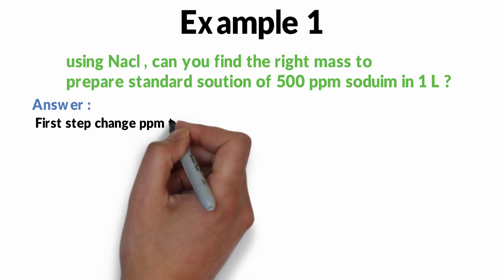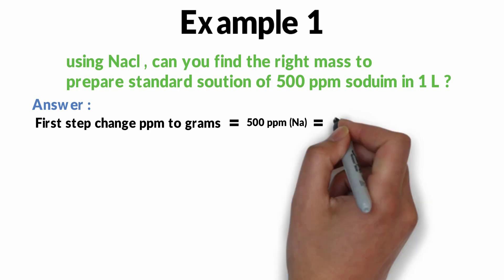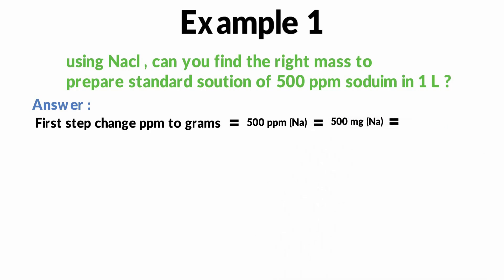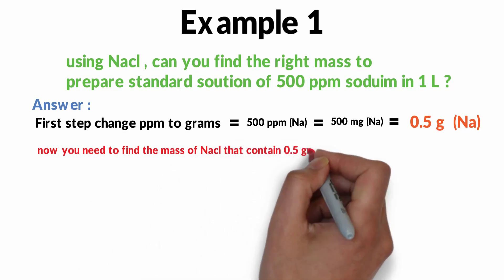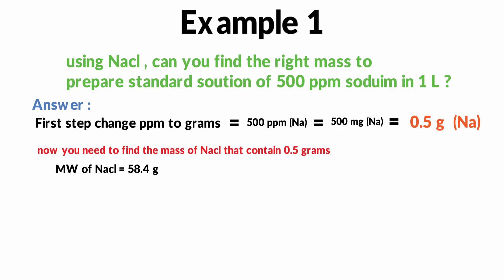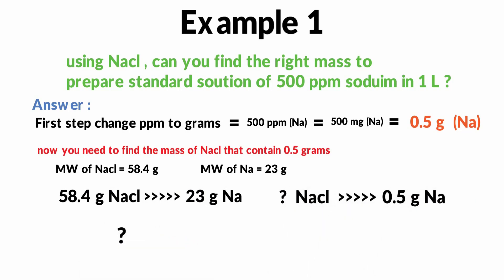First step, you need to change ppm to grams. 500 ppm equals 500 milligrams, that is 0.5 grams of sodium. Now you need to find the mass of sodium chloride that contains 0.5 grams. The molecular weight of sodium chloride is 58.4 and the molecular weight of sodium is 23 grams. Now solving these mathematical equations: 58.4 divided by 23 times 0.5 grams equals 1.269 grams of sodium chloride. That is the grams you need to prepare your standard solution.